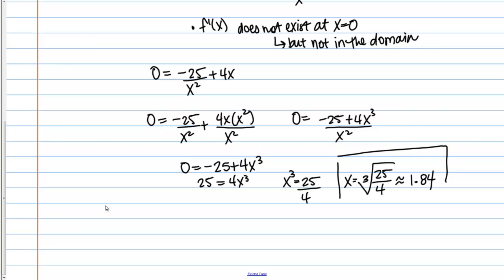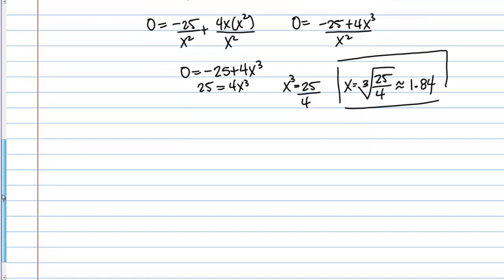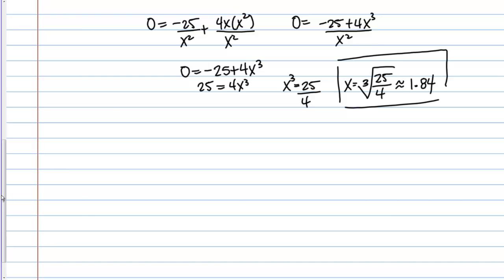We don't yet know if it's actually a local max or min, but it is a critical point. So next then we do want to determine if indeed that is a local max or min. So there are two ways you can do that. You can use a second derivative test or you can set up a number line. I'm going to set up a number line in this case.